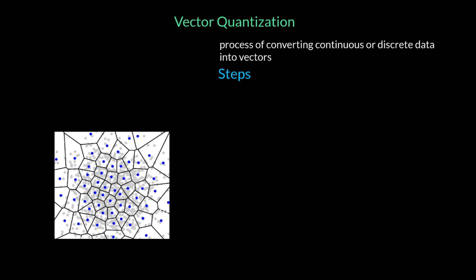Simply said, vector quantization is the process of converting continuous or discrete data into vectors. Now the key goal of quantization is to get a compact representation so that we achieve data compression. There are three steps involved in the process. To understand it, let's take a look at two-dimensional data with dimensions X and Y. First, we cluster the given data and get the centroids for each cluster that are shown as blue dots.